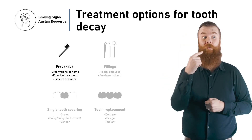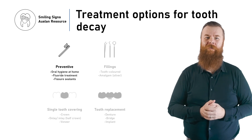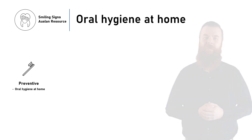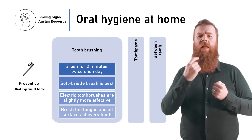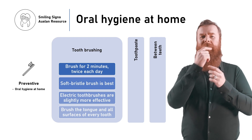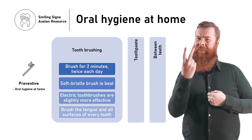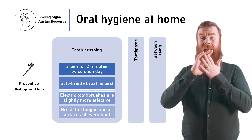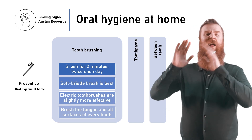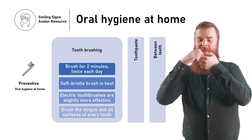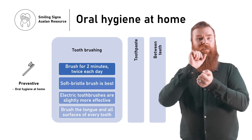There are many things you can do at home to prevent tooth decay. Bacteria in the mouth form a sticky film on the teeth called plaque. Brushing your teeth twice a day cleans the plaque from the teeth. If the plaque is not brushed away, it becomes hard. Hard plaque is called calculus and cannot easily be brushed off the teeth. Calculus needs to be cleaned off by a dentist.